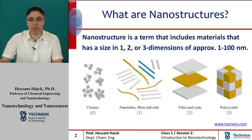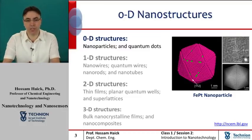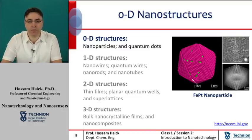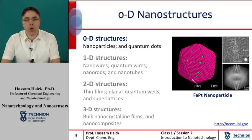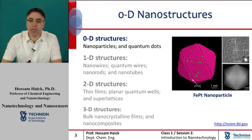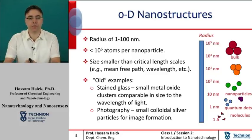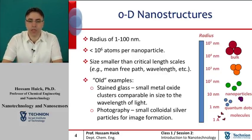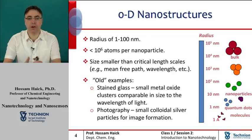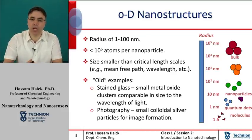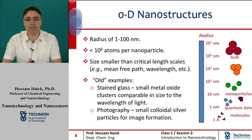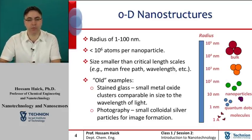We will describe each of these nanostructures in more detail in the next sessions. We will start now with defining the zero-dimensional nanostructures, which include, basically, the nanoparticles and the quantum dots. Nanoparticles are defined as small objects that are sized between 1 and 100 nanometers, and that behave as a whole unit with respect to their transport properties.